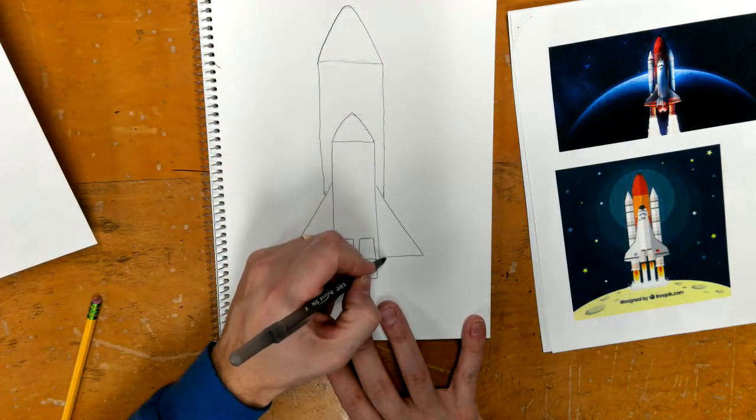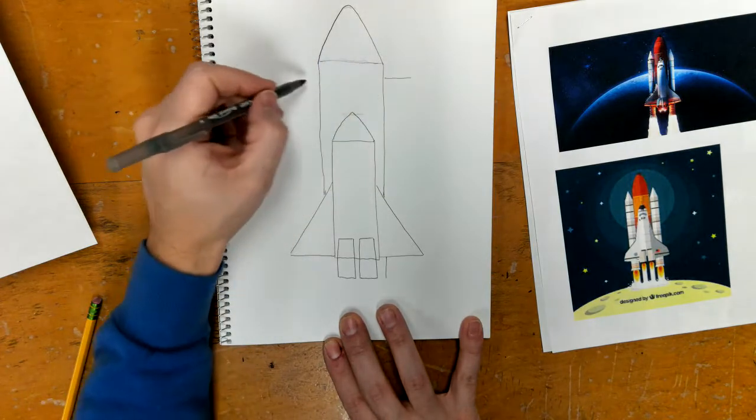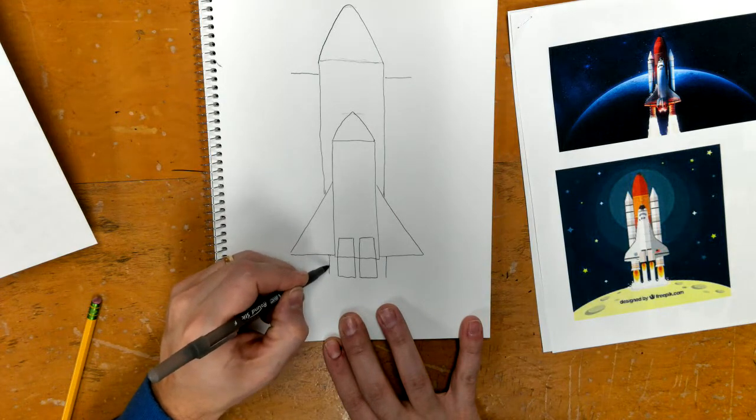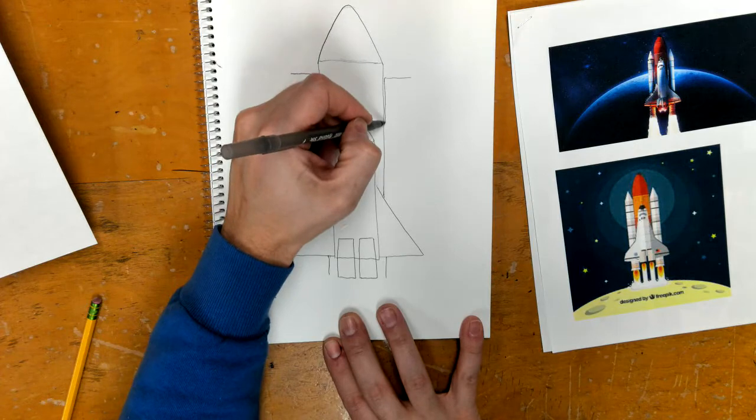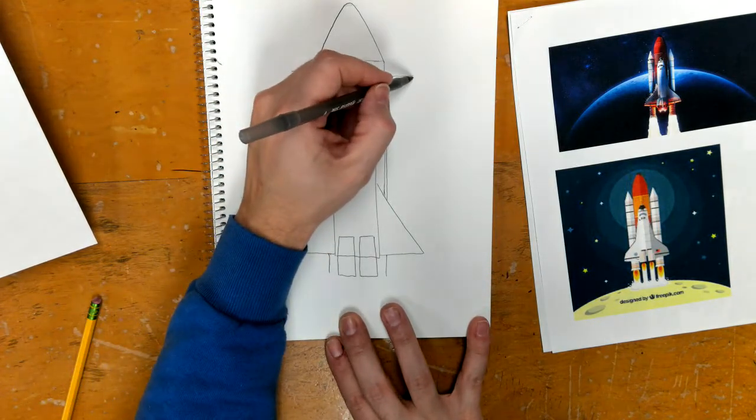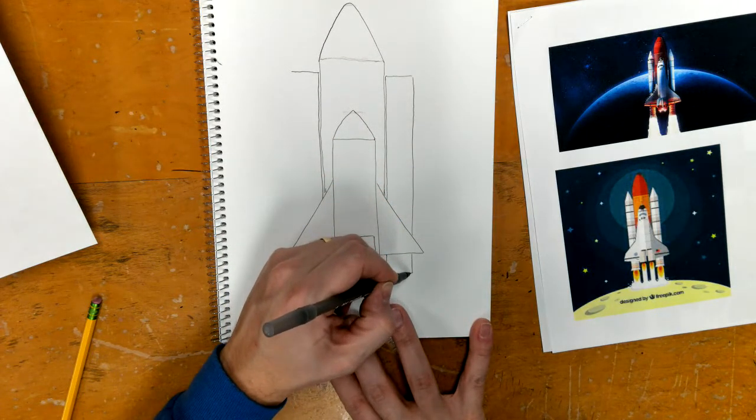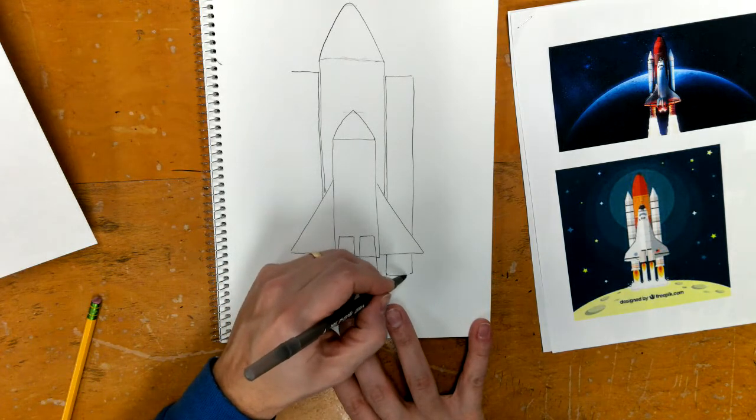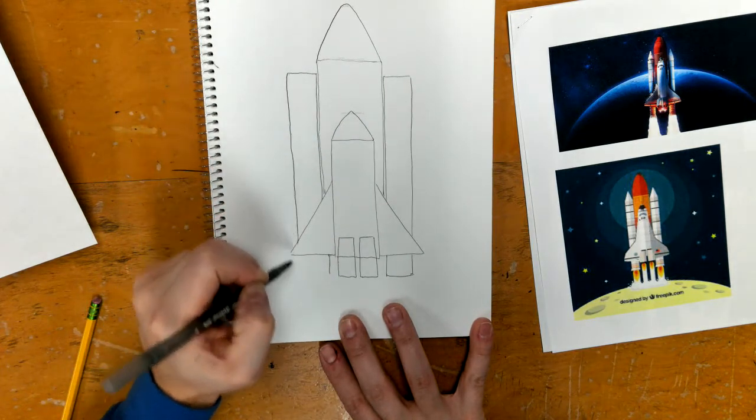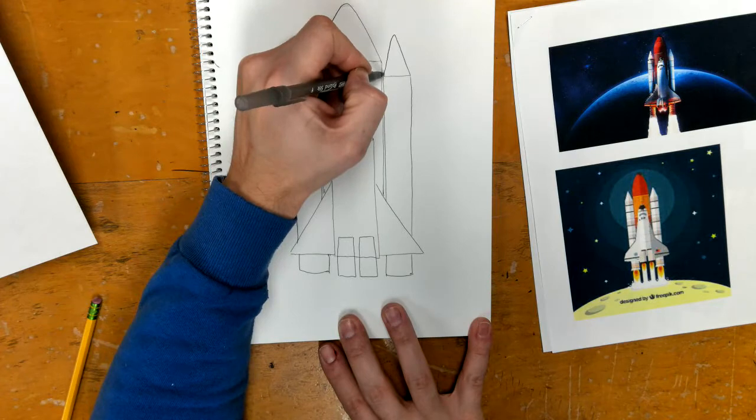And then on top of that we have that pointy triangle. Next to those we're going to have these other rockets that come kind of to about here, again a really long rectangle goes under the wings.